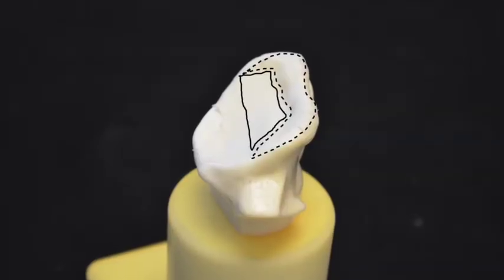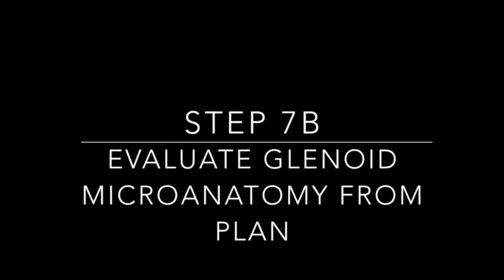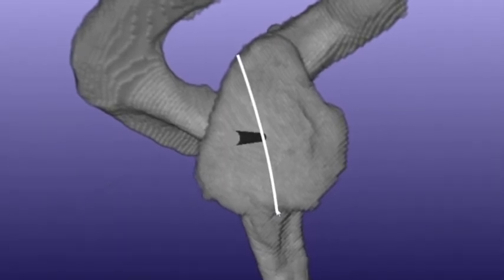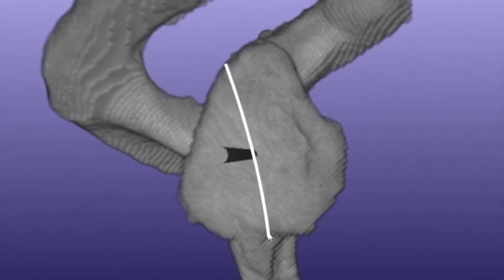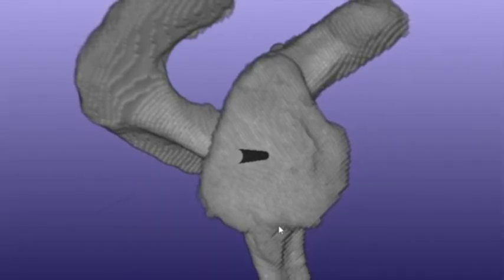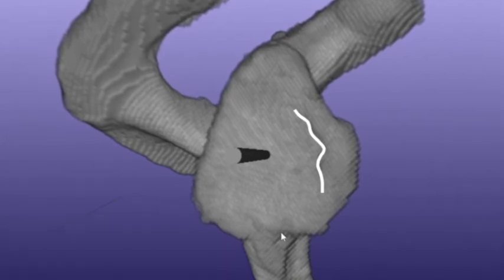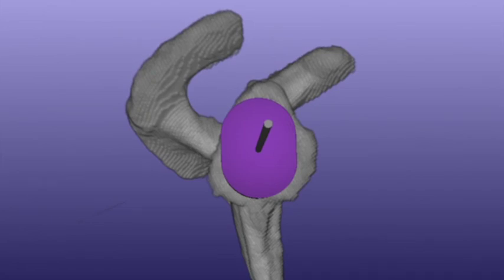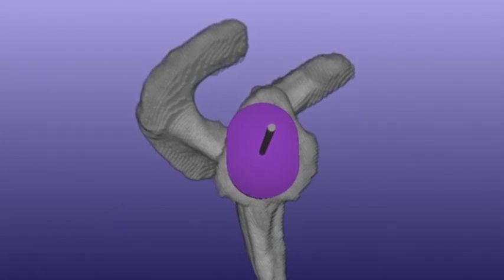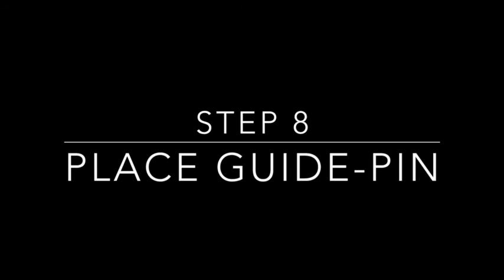For demonstration purposes, a model is used as the surrogate patient for the remainder of the video. The next step is to evaluate the glenoid microanatomy from the three-dimensional plan. We first note the position of the central guide pin relative to the biconcave line — here the pin sits directly on it. We then look for other identifiable landmarks on the glenoid surface or rim. In this case, the patient has a large indentation on the inner margin of the anterior osteophyte directly across from the planned guide pin location. We reference the en-face view of the implant to note the overhanging osteophyte, most notably anteriorly.